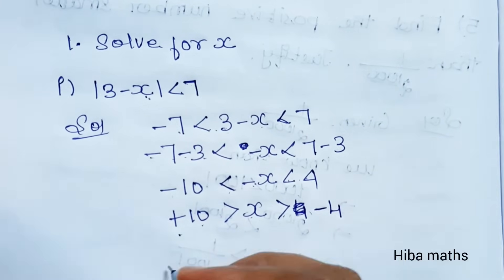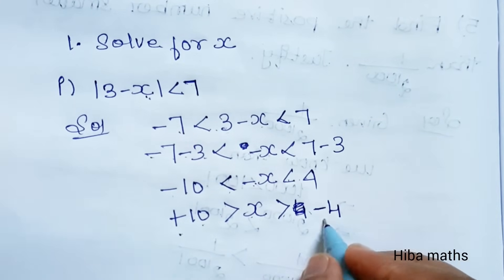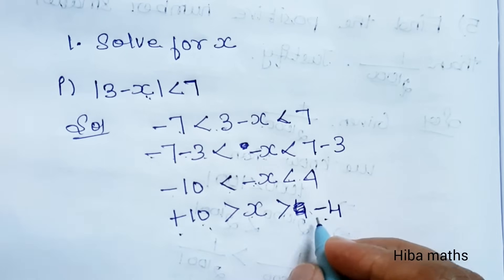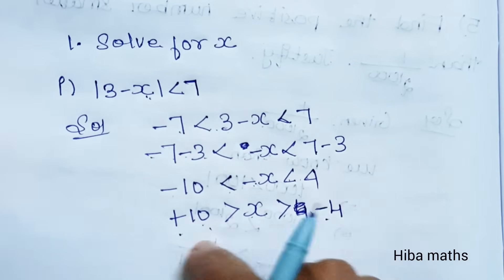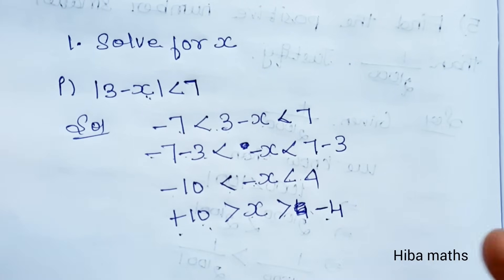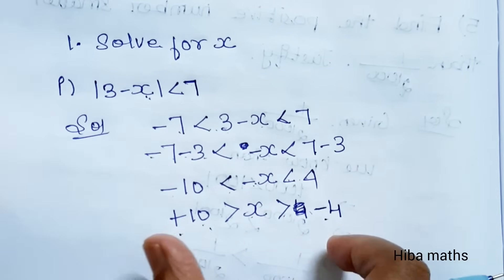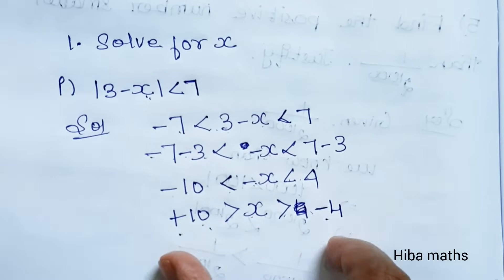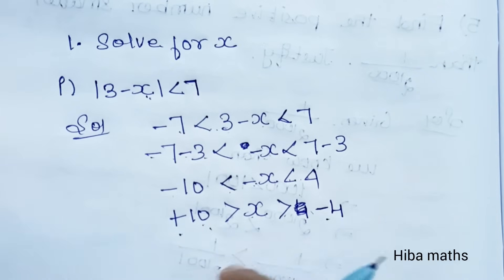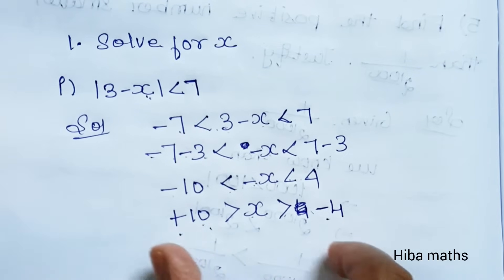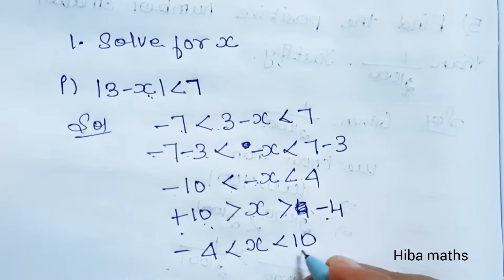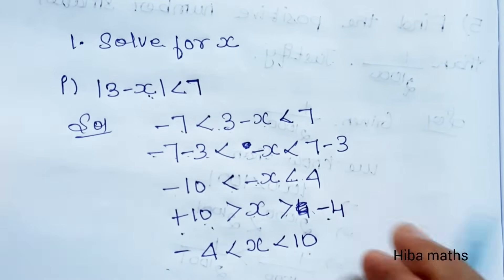Let's write the final answer. Minus 4 is less than x is less than 10. So the solution for subdivision 1 is x belongs to the interval minus 4 to plus 10.